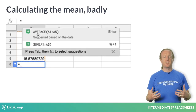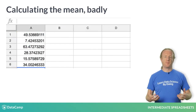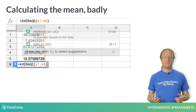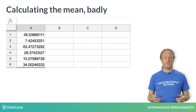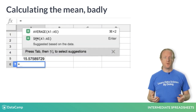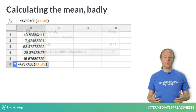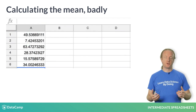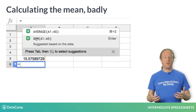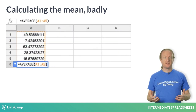Let's start with an easy problem: calculating the mean of five numbers. You type equals to denote a formula, call the AVERAGE function, and pass it the range of cells containing the numbers.